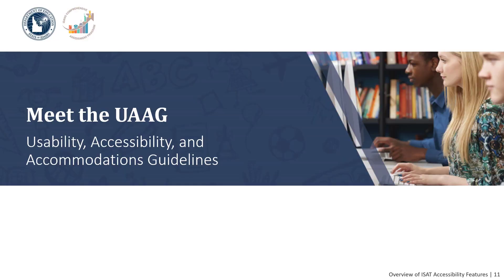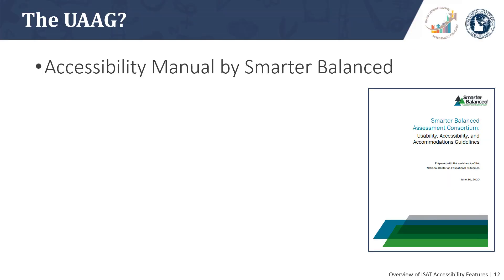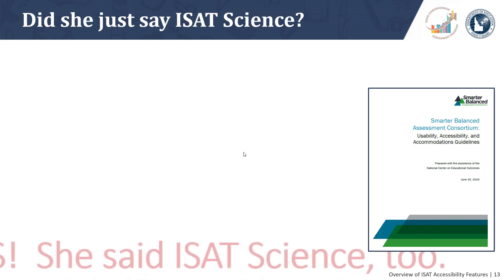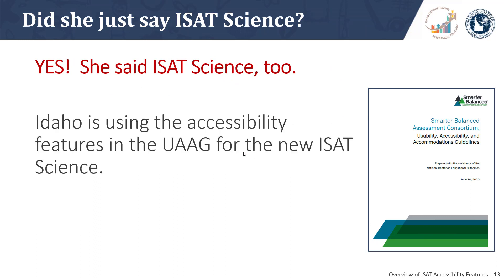It's time to meet your friendly UWAG. The UWAG is the accessibility manual developed by Smarter Balanced. It describes all of the accessibility features that students are allowed to use when taking the Smarter Balanced assessments, which are our ISATs in English Language Arts and Mathematics and the ISAT Science assessment. Students taking the ISAT Science assessments in grades 5, 8, and 11 are allowed to use the applicable accessibility features described in the Smarter Balanced UWAG.